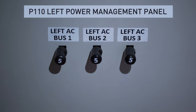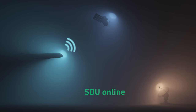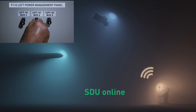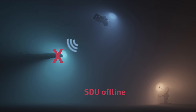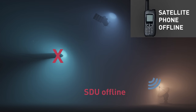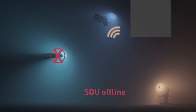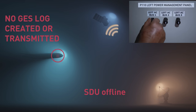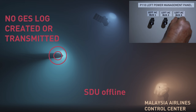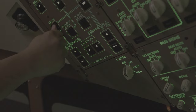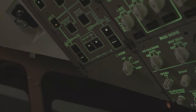It could not have happened before. Pulling the three circuit breakers ensures the satellite data unit is now offline and that neither the onboard satellite phones nor the internet connection are available to the cabin crew or passengers. The cabin occupants cannot now alert anyone on the ground to the situation. Additionally, by pulling the breakers in the electronic and equipment bay, no ground earth station log — or GES log — is generated by the aircraft's avionics that would otherwise be transmitted back to the Malaysia Airlines Control Centre for analysis. If the satellite data unit was switched off via the cockpit overhead panel, a GES log would have been created and sent. This did not happen.